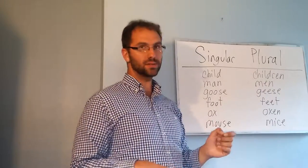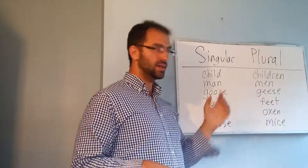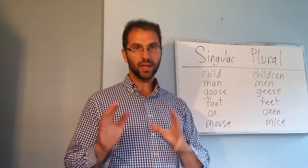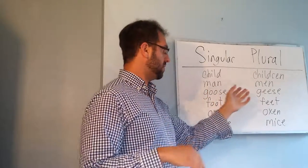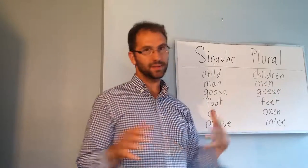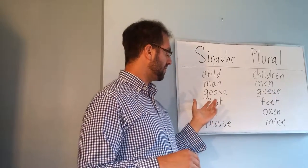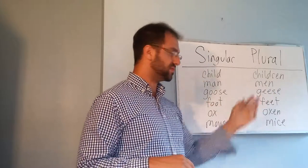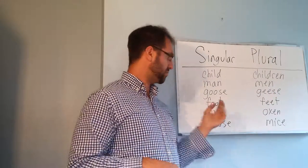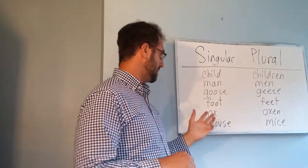Goose becomes geese — it's g-o-o-s-e as a singular noun, but when it's plural it's g-e-e-s-e. Next we have foot, which becomes feet; you replace the two o's in the middle with two e's.